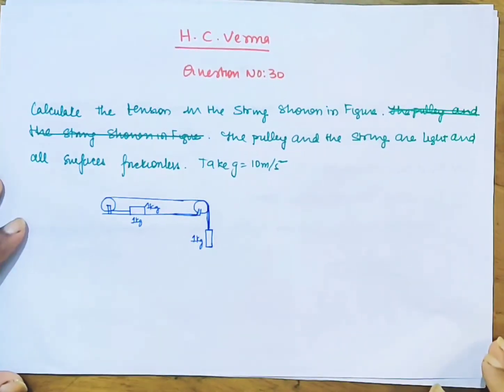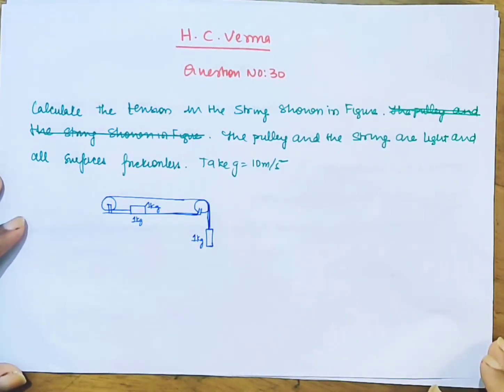Question 30. What is the tension in the string as shown in figure? The pulley and the string are light and all surfaces are frictionless.